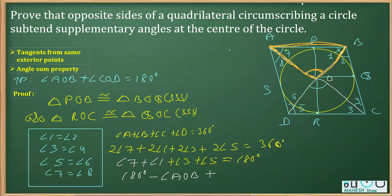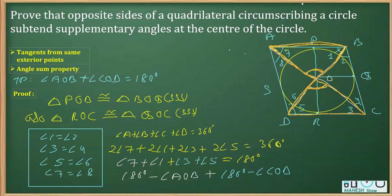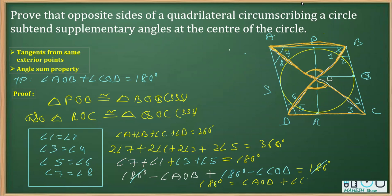Consider angles 3 and 5 in triangle COD: angle 3 + angle 5 + angle COD = 180°, so angle 3 + angle 5 = 180° − angle COD. Substituting back: (180° − angle AOB) + (180° − angle COD) = 180°. The two 180s cancel when transposing, giving angle AOB + angle COD = 180°. This is exactly what we needed to prove.